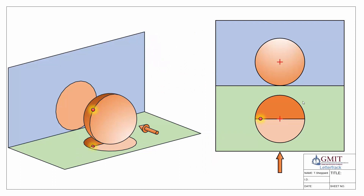We'll begin by looking at a typical situation where we have a sphere. Here we have a point on the outer surface of our sphere. Looking at our 3D and plan view, we can see that the point on our sphere is located along the extreme generator in our plan view. The extreme generator is this band all the way around our sphere which marks the front from the back of our object.